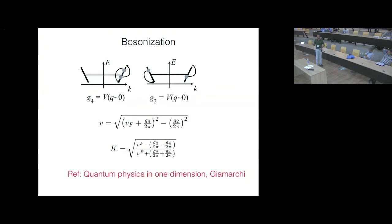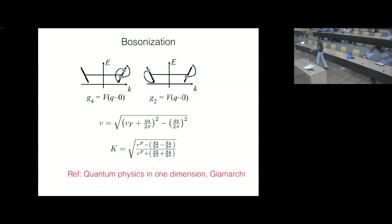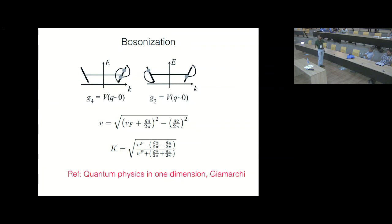K contains the interactions. For a one-dimensional system, you have left movers and right movers — this is the dispersion, this is the right-moving branch and this is the left-moving branch. We are initially going to think about only spinless fermions. When you have spinless fermions and turn on interactions, there are two kinds of processes: one is that two fermions which are both on the same side of the dispersion — both left movers or right movers — scatter while remaining on the same side, which is the interaction with strength g4.